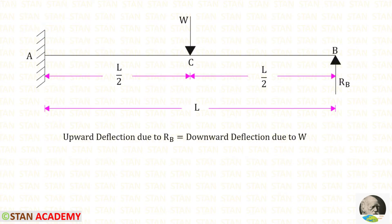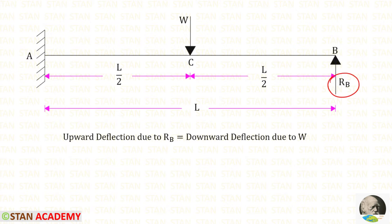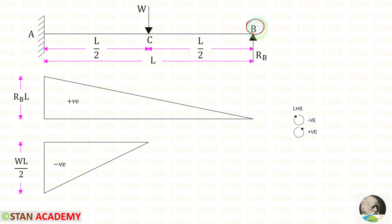First we are going to find the prop reaction RB. Since at point B there is a prop, the deflection will be zero. Using that concept we can make this expression: the upward deflection due to RB and the downward deflection due to W should be equal. Then only at point B will the deflection be zero. To find the deflection due to RB and due to W, let us use the moment area method.